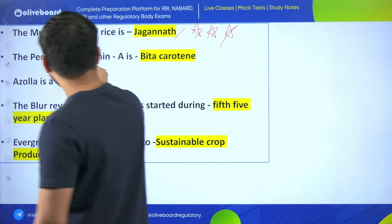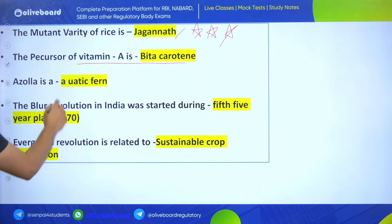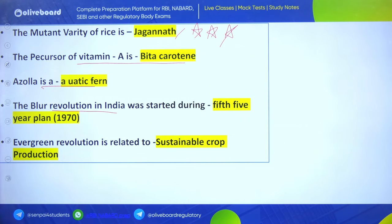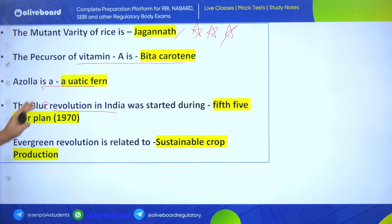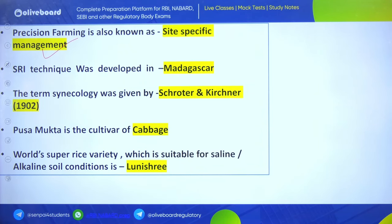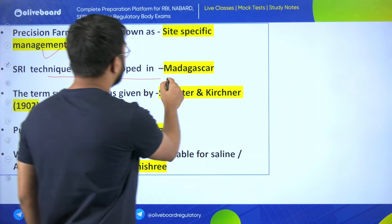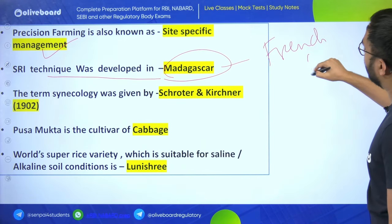Mutant variety of rice Jagannath is very important - asked in AFO. Beta carotene is a precursor of Vitamin A. Blue revolution in India started in the fifth five-year plan. Evergreen revolution is related to sustainable crop production. Precision farming is also known as site-specific management. SRI technique was developed in Madagascar by Father Henri de Laulanié.